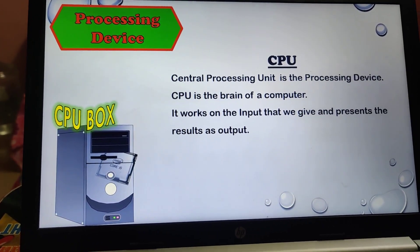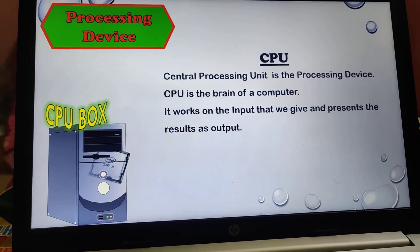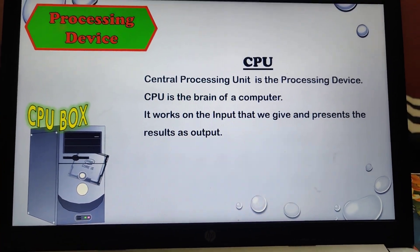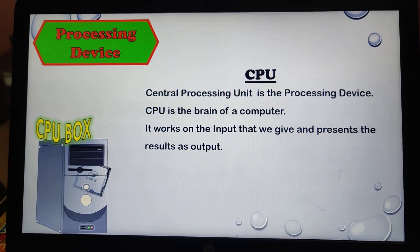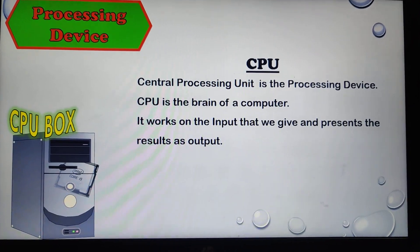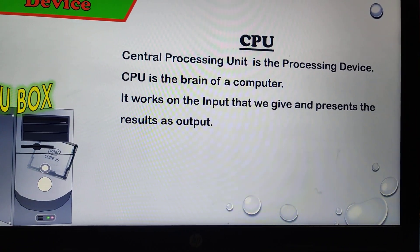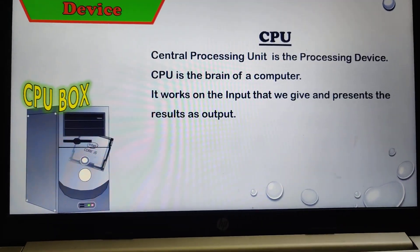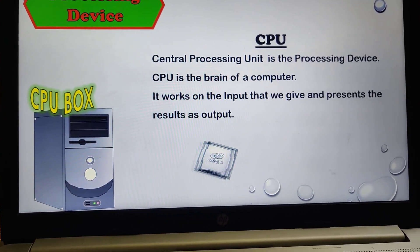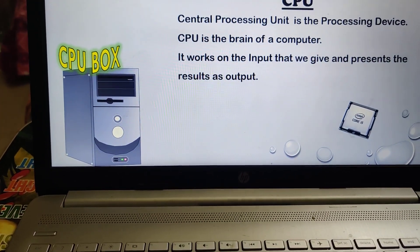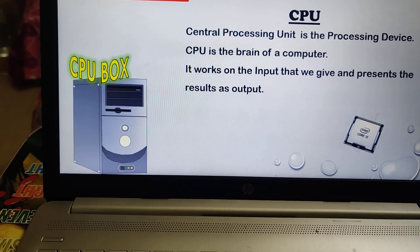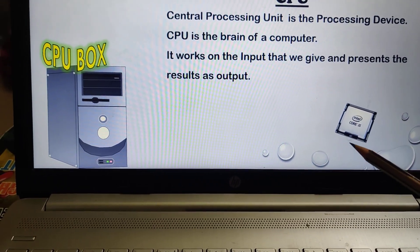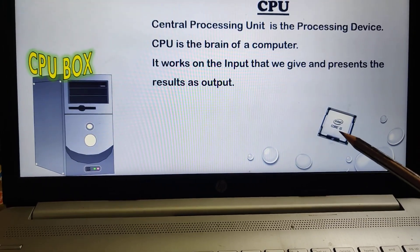Processing device — CPU. The central processing unit is the processing device. CPU is the brain of a computer. It works on the input that we give and presents the result as output. The work that we want to do on a computer — first we give input, then the CPU processes it. Note: what we call the CPU box is not the CPU itself. The CPU is a small part inside the CPU box — that is the brain of a computer.